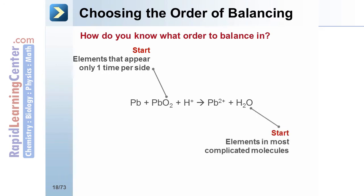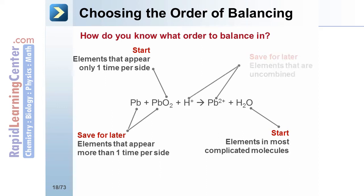There is more than one element that only appears one time. Then balance the elements which are in the most complicated molecules first. Save elements that appear in more than one compound for later. Also, save elements that appear uncombined for last.